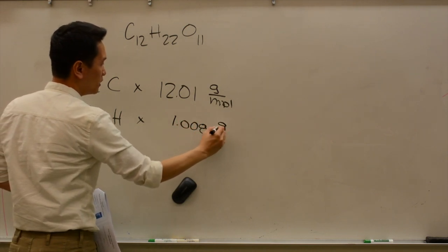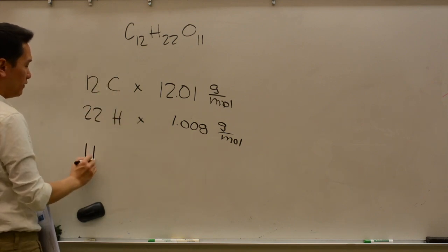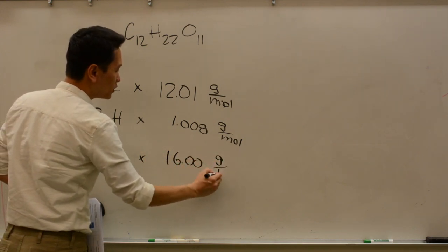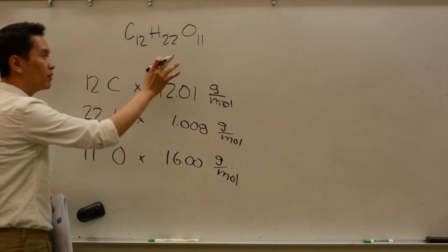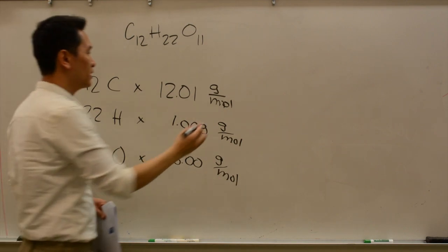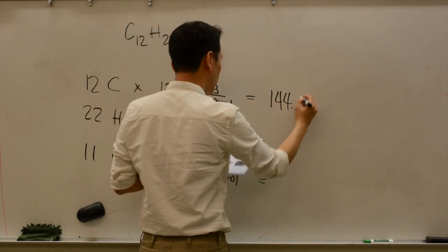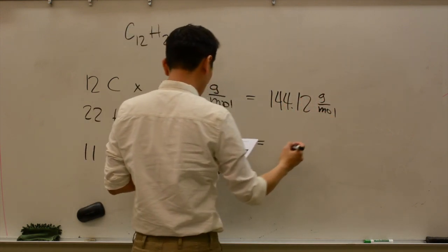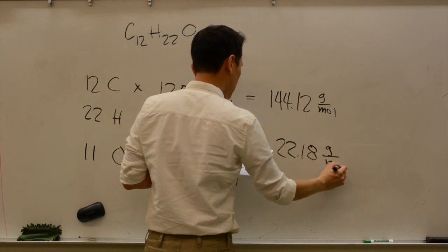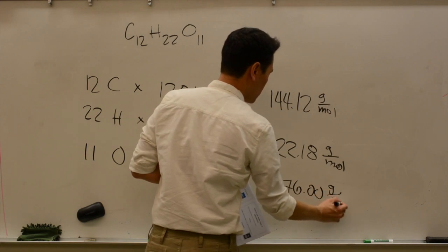How about oxygens? We have 11 oxygens, and each oxygen is 16.00 grams per mole. So we need to know the molar mass of this whole thing, which is add up all the individual components. For example, this would give us 144.12 grams per mole. This is 22.18 grams per mole. This is 176 grams per mole.